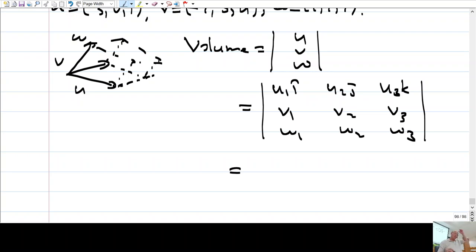Note that if I write it this way: u1, u2, u3; v1, v2, v3; w1, w2, w3. This would be what? This would be the following.